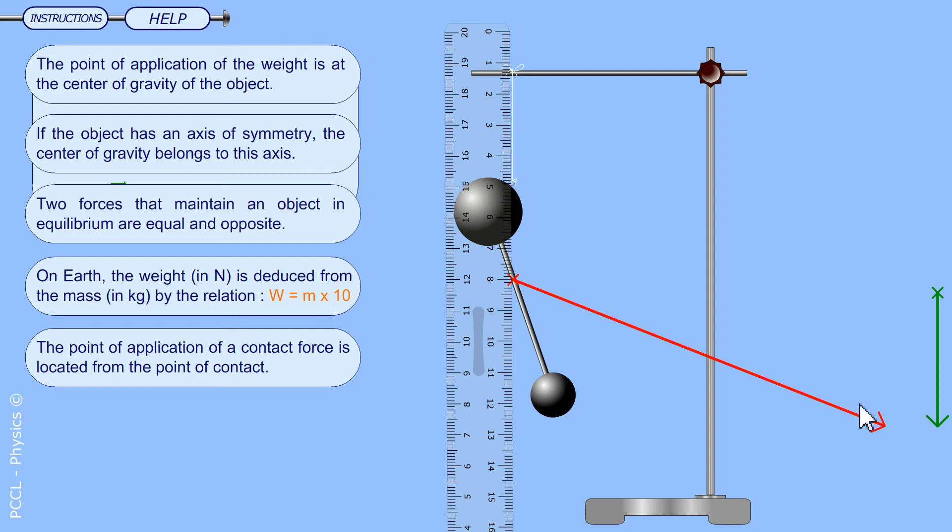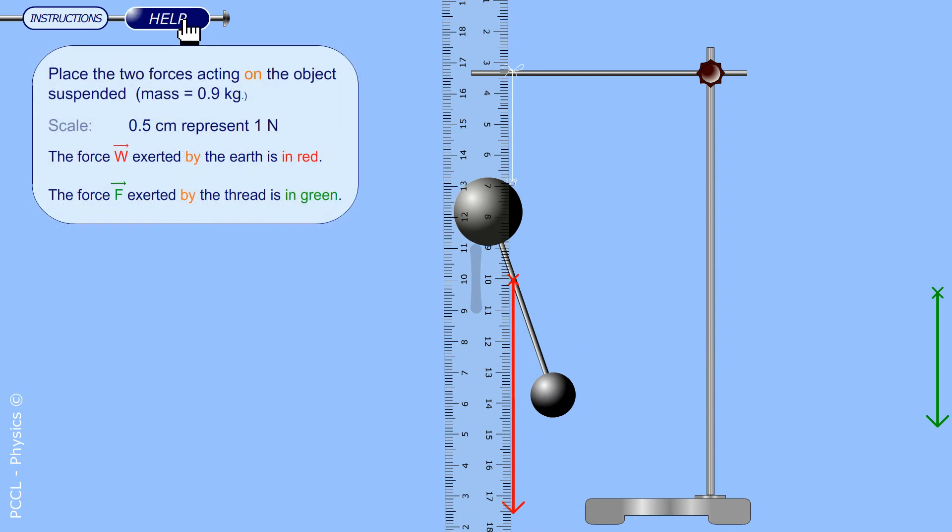The weight is directed downwards but I know only the mass. 0.9 kilograms times 10 equals 9 newtons. Since 1 newton is 0.5 centimeters then 9 newtons will be represented by 4.5 centimeters. So I can show you the weight of that object.